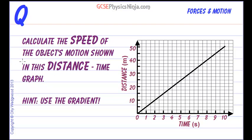Calculate the speed of the object's motion shown in this distance-time graph — hint: use the gradient. This is a distance-time graph, and if we have a straight line, we can find the speed by calculating the gradient of this line.